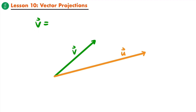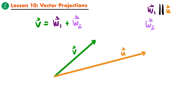We want vector v to equal the sum of two vector components, vector w1 and vector w2. Vector w1 will represent the vector component of vector v that's parallel to vector u. If we start at the terminal point of vector v and draw an imaginary line that is perpendicular to vector u — so this would be a right angle — then vector w1, the vector component of vector v parallel to vector u, will look like this.